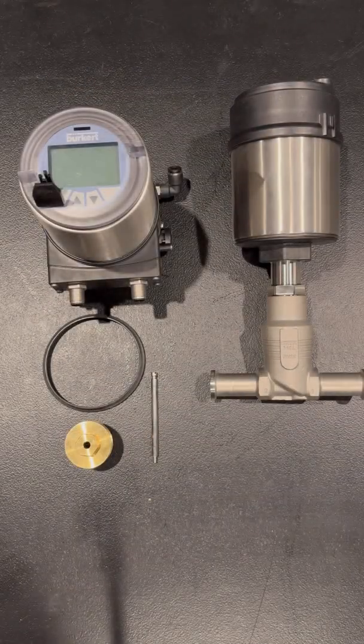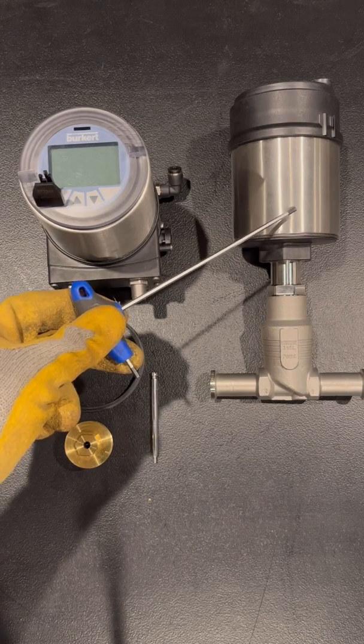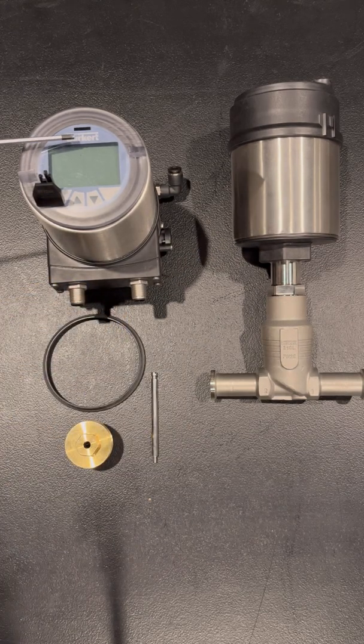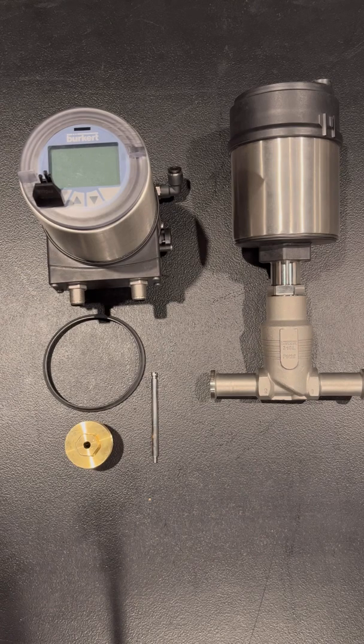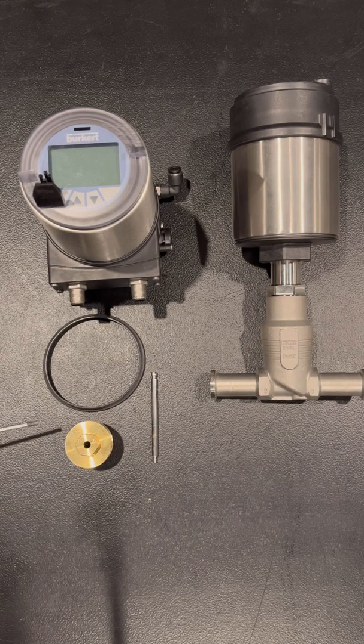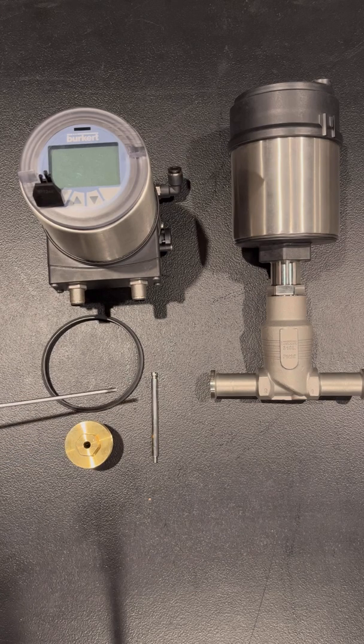For this demonstration we'll be using our 2301 series globe control valve, 8692 series positioner, the sensor puck that's included with the positioner, as well as the Burkert universal element mounting kit which includes a form seal, brass bushing, and spindle.